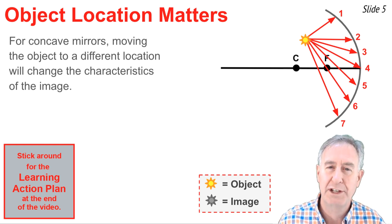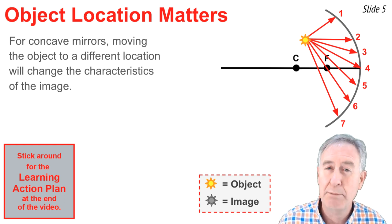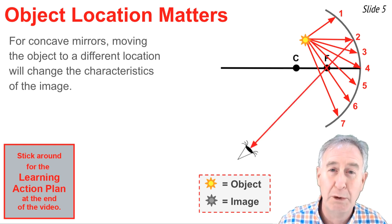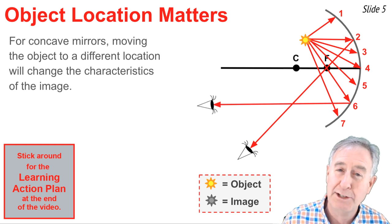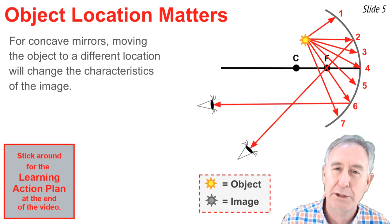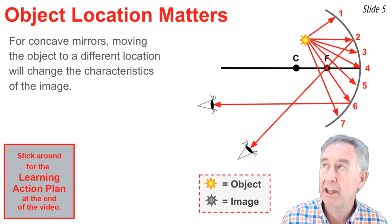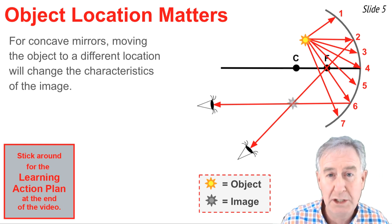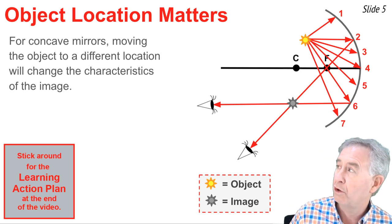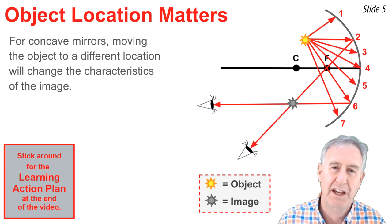Of the seven incident rays, we happen to know that ray number two is traveling parallel to the principal axis, so it will reflect and pass through the focal point. And ray number six passes through the focal point on the way to the mirror, so it reflects parallel to the principal axis. At this point that we have ray two and ray six's reflected ray, we know that the image is located as shown where the gray little star is at.